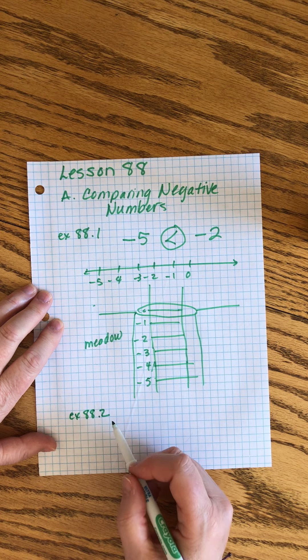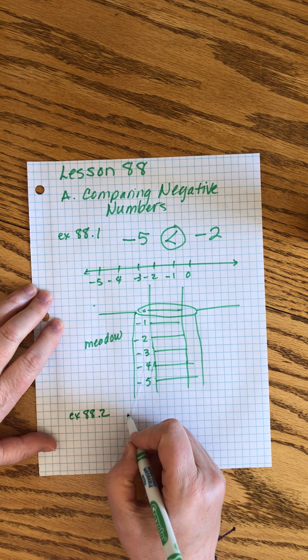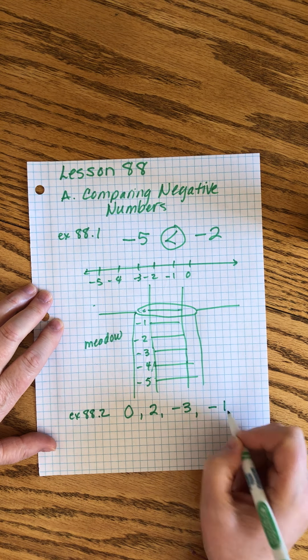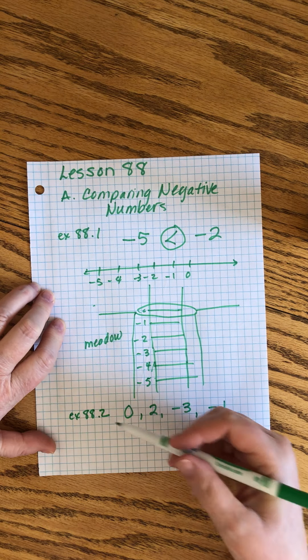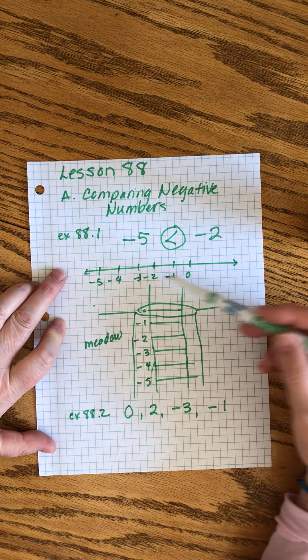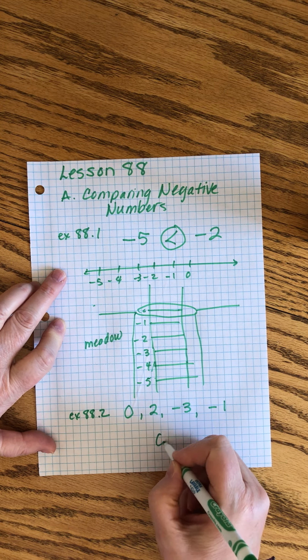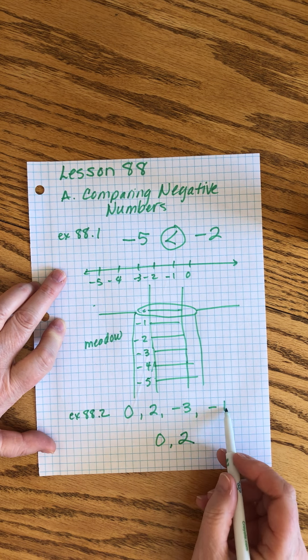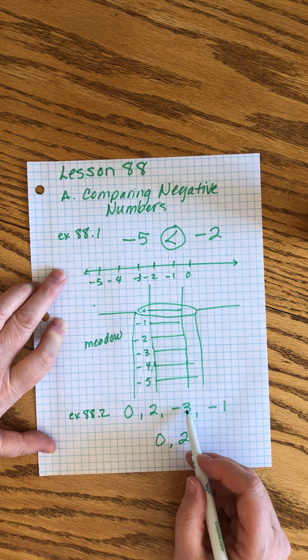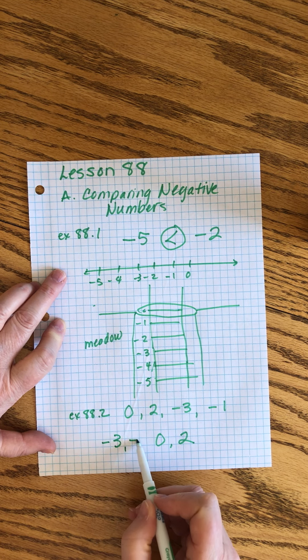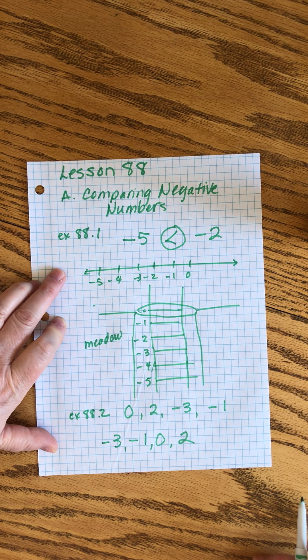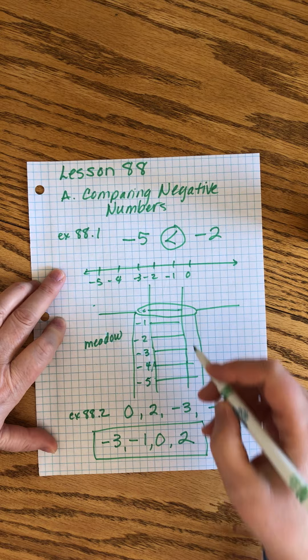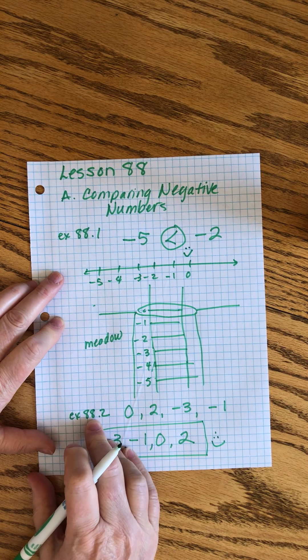Example 88.2. Now we're supposed to arrange these numbers in order from the least to the greatest: zero, two, negative three, negative one. All we have to do is imagine a number line. I'm going to start with zero being in the middle, two is the only positive number so that would be the biggest, and then here we have the scenario where this is further down in the hole so that's the smallest. Make sense? That's the right answer, yay, all right.